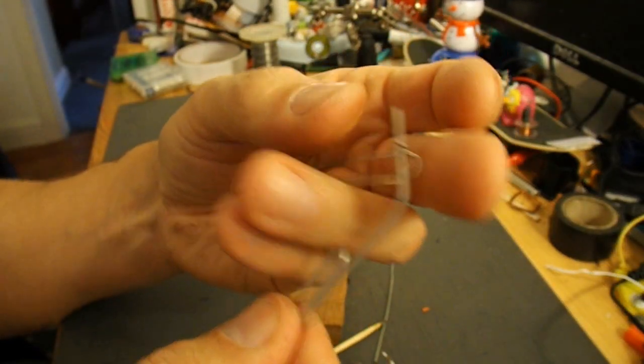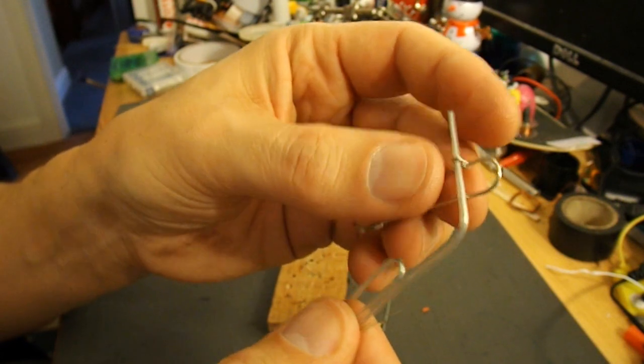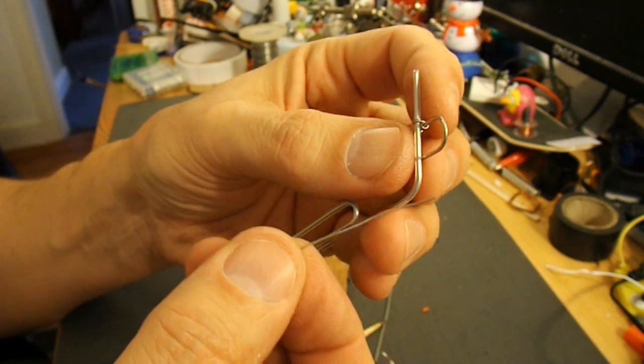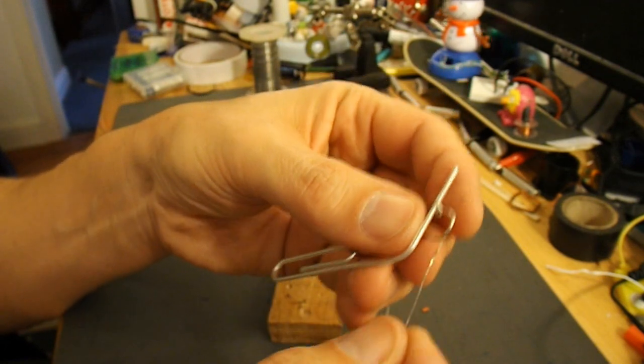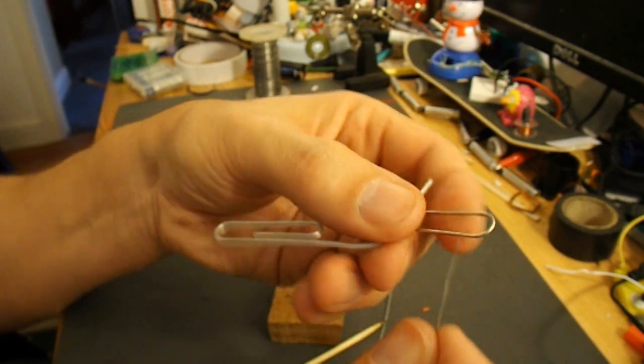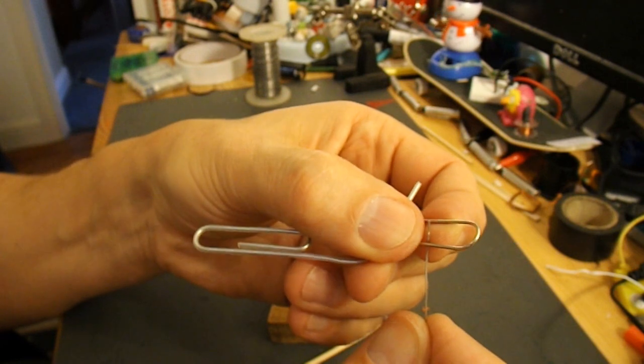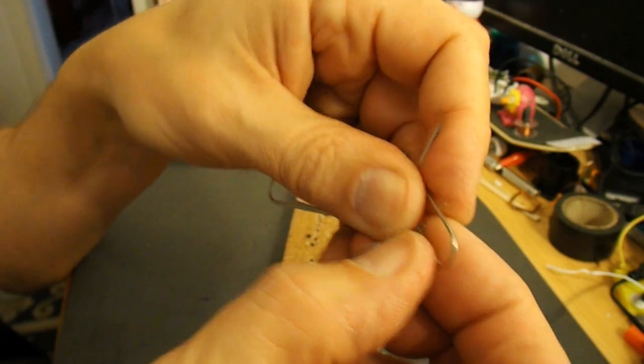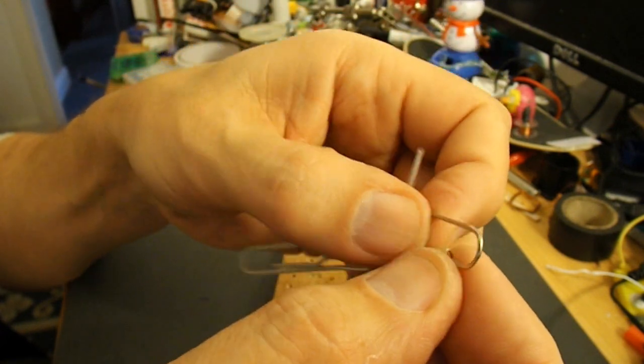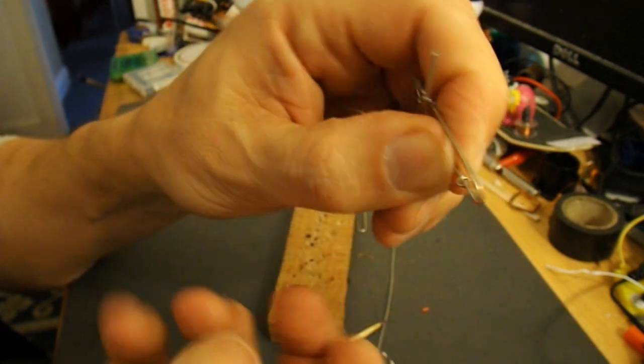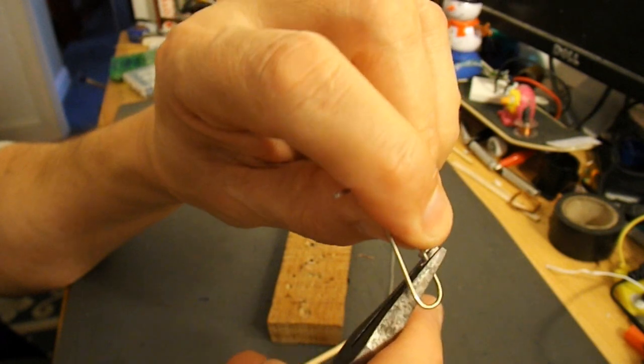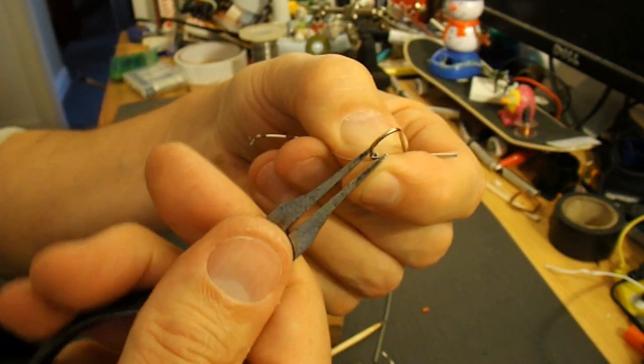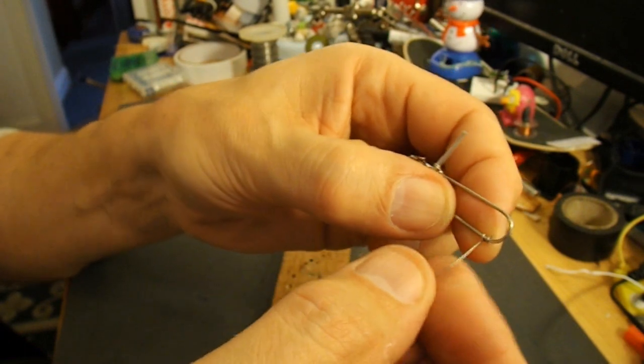Let's see if I can show you how I made the axle bearings. Got some thin single core wire here which I'll wrap around. I'm afraid my fingers are a bit big to show you what's going on. Right, that's wrapped around there.